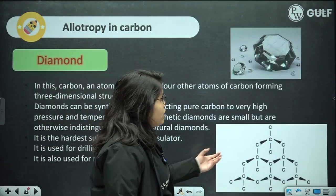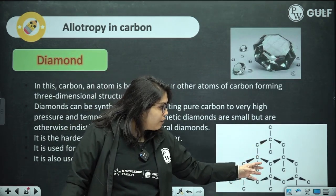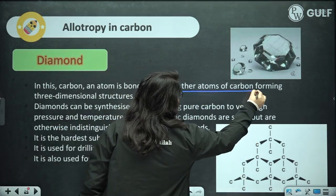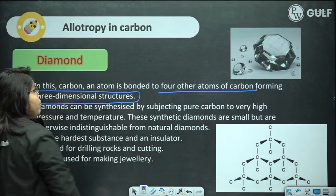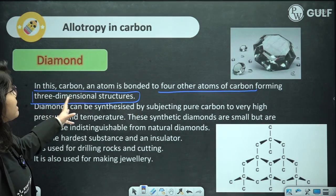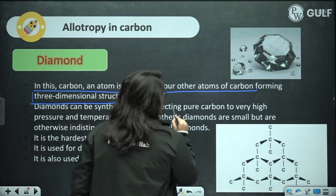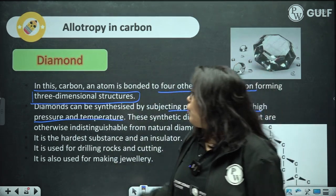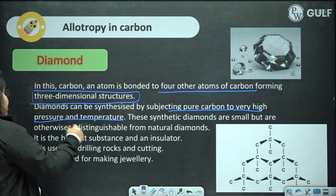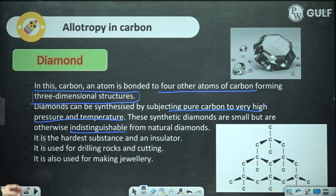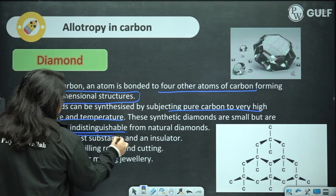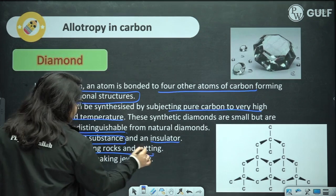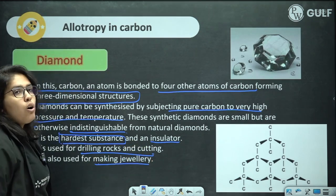In diamond, each carbon atom is bonded to four other carbon atoms, forming a three-dimensional cage-like structure. Diamonds can be synthesized by subjecting pure carbon to very high pressure and temperature. These synthetic diamonds are small but otherwise indistinguishable from natural diamonds. Diamond is the hardest substance and is an insulator — it does not conduct electricity. It is used for drilling rocks, cutting, and of course for making jewellery.